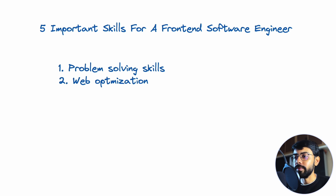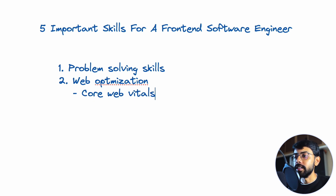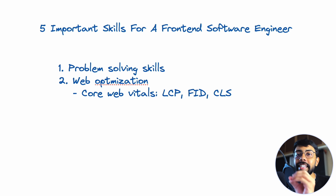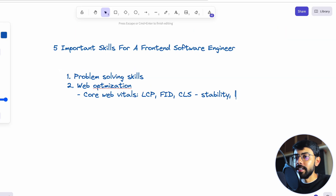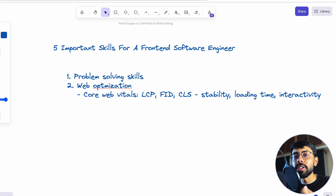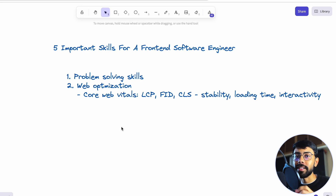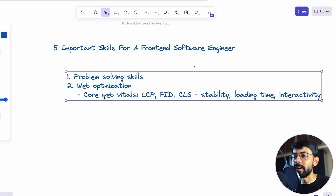There are many important concepts here, like Core Web Vitals — LCP, FID, and CLS. These three metrics help improve your web page in terms of stability, loading time, and interactivity. These are really important things to know. I will share some resources in the description so you can refer to them. If you work in good companies, you will definitely have to work on web optimization.